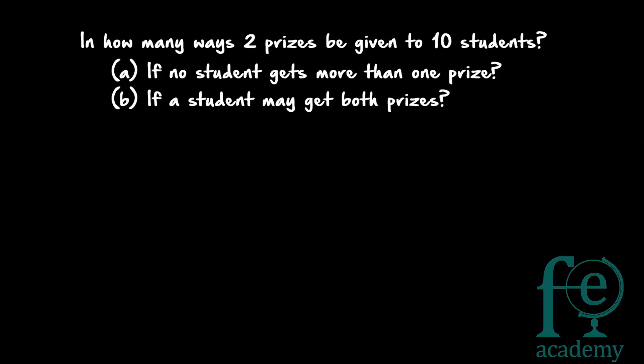Welcome to today's class. Today's question is: in how many ways can two prizes be given to ten students? First case — no student gets more than one prize. Second case — a student may get both prizes. There are two prizes, and we need to find how many ways these can be given to ten students.